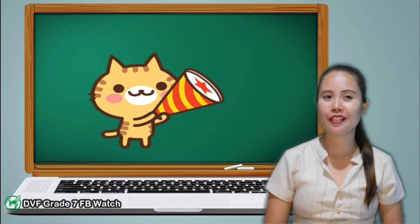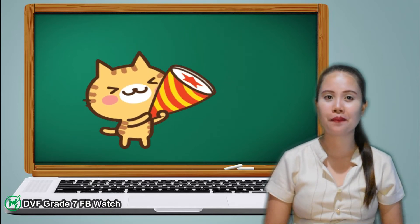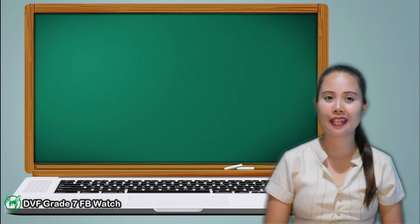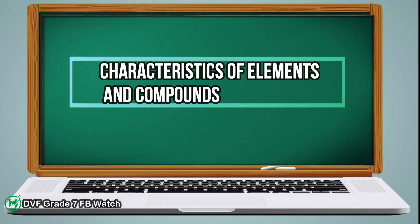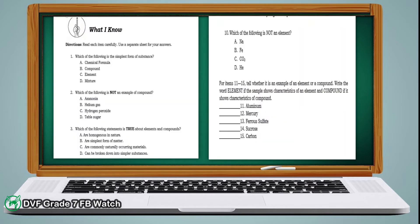Now that you already know the differences between elements and compounds, let us proceed to our activities. In lesson 1, which is about characteristics of elements and compounds, let's start with what I know. There are 15 questions to answer. For numbers 1 to 10, just write the letter of your choice. For numbers 11 to 15, write the word 'element' if the given example shows characteristics of an element, and 'compound' if it shows characteristics of a compound.